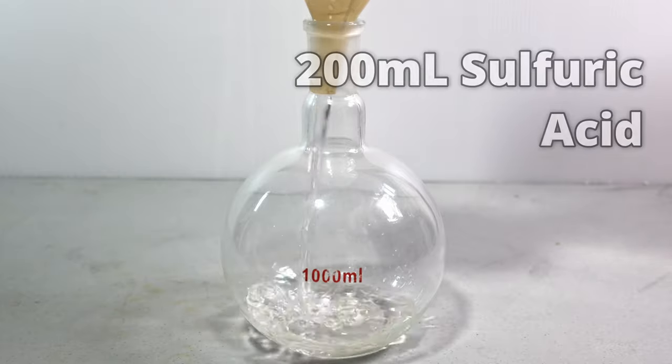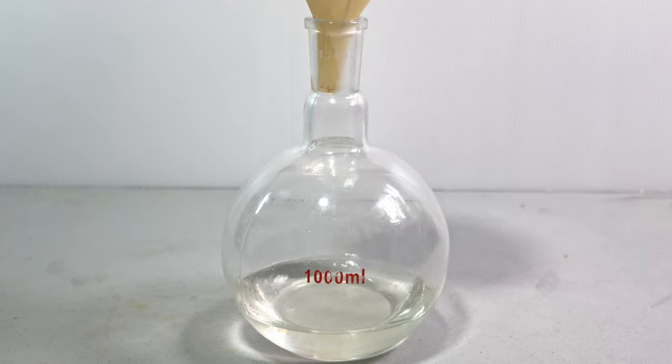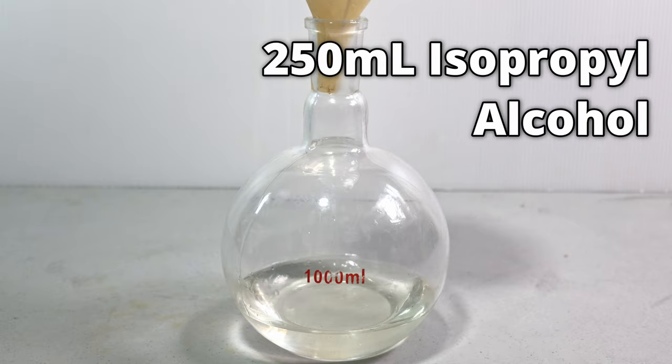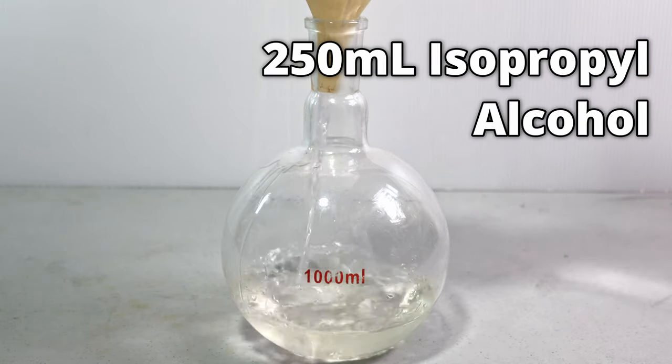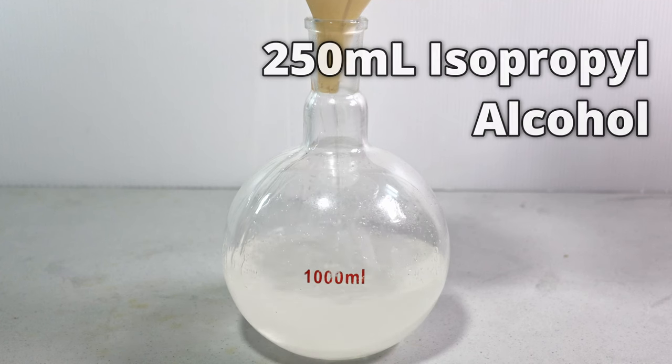The first thing I'm going to do is add 200 milliliters of sulfuric acid. The next thing I'm going to do is put in 250 milliliters of isopropyl alcohol. This is just to start off the reaction. I'm going to add more as the reaction progresses.